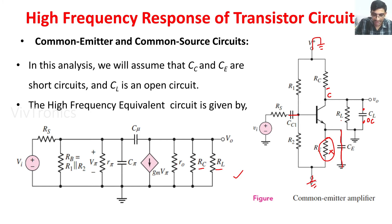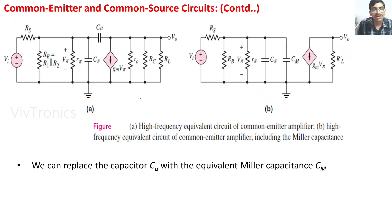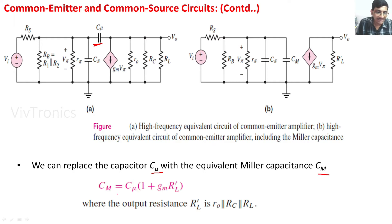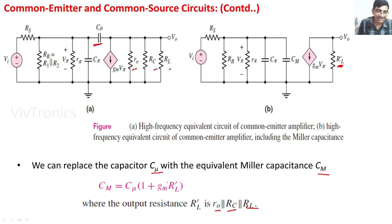This gives the high frequency equivalent circuit of the common emitter configuration. To simplify further, we replace the feedback capacitor Cmu with the equivalent Miller capacitance CM. The Miller capacitance CM equals Cmu multiplied by (1 + gm·RL'). Here RL' is the parallel combination of r0, RC, and RL — the three output-side resistances replaced by a single resistance RL'.